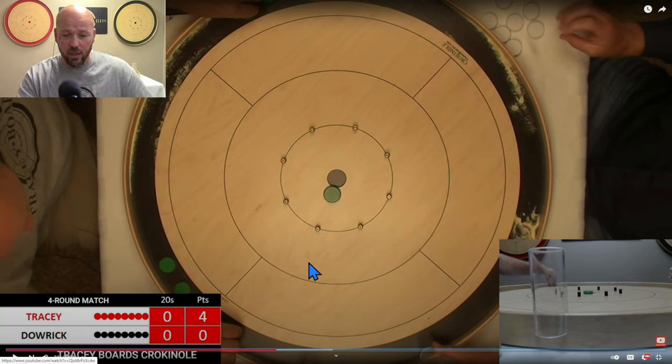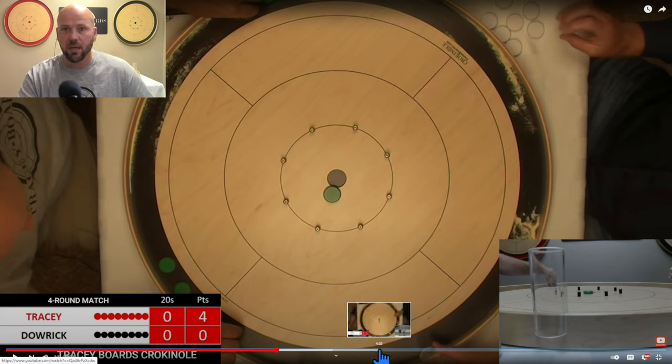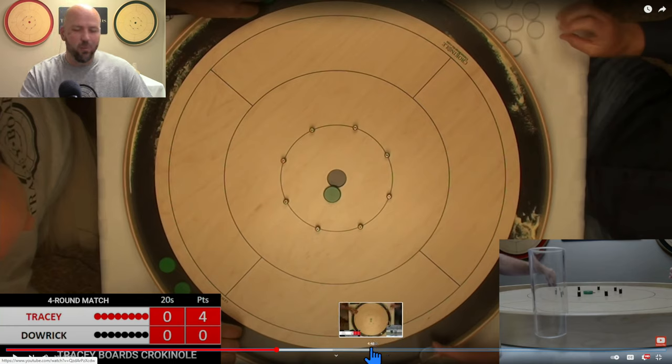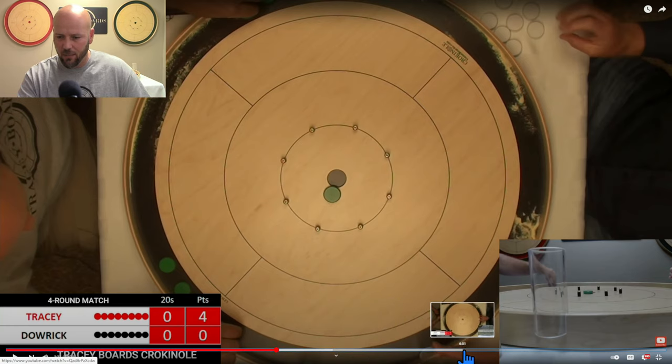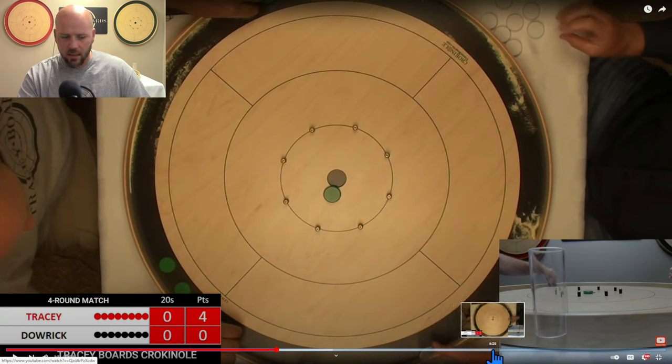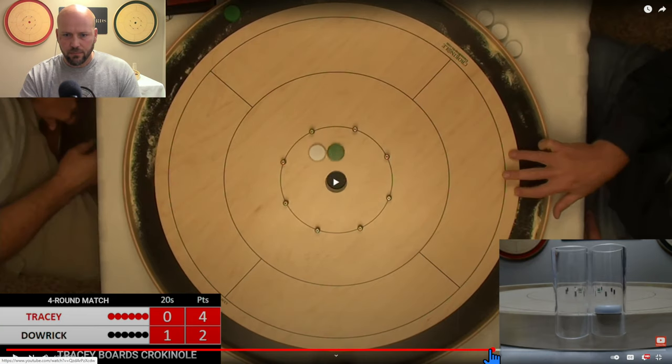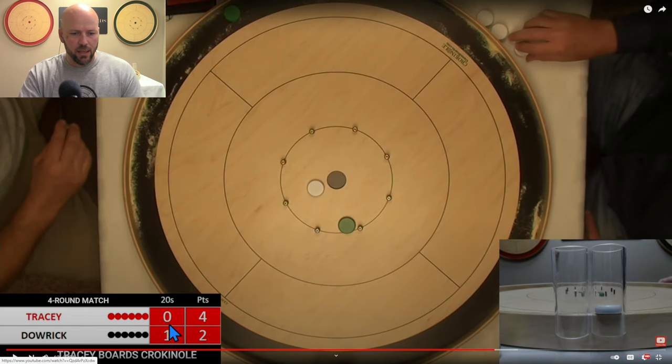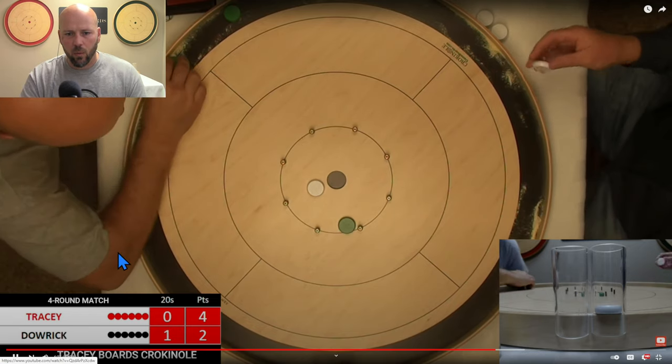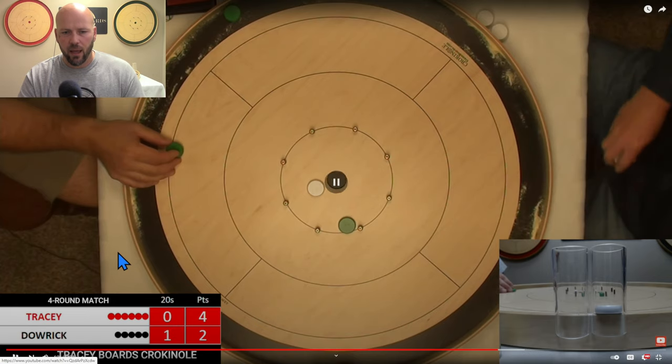At this point, we're going to jump to round number four, because round three was just - Simon will say I jumped past it because he won that round, but the truth is there isn't really any strategy to break down. So we're going to jump to round four at 6:27. So at this point, Simon is up by a 20, but I have the hammer, and we've got one button of each color on.